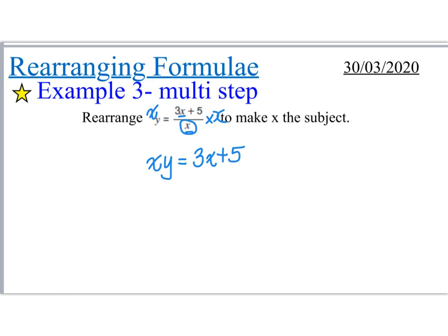Now this goes against everything that I've said in all the previous examples, but I'm going to actually move the 3x this time. And you'll see why in just a moment. So I'm going to subtract 3x from this side, and also from this side. And when I do that, I end up with xy minus 3x is equal to just 5.